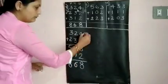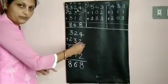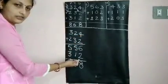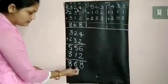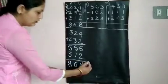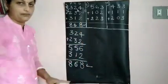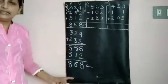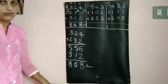So first you will add first 2 numbers. With the answer you will add the third number. So you have got 868. So both the answers are same. You can add in any order. The answer remains same.